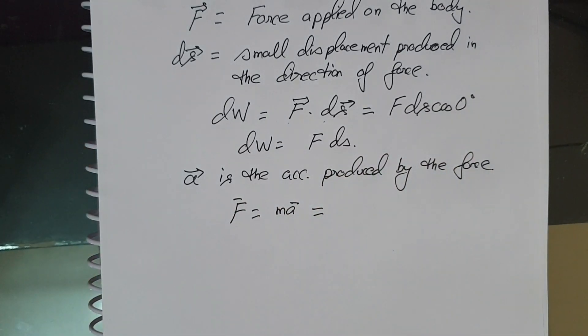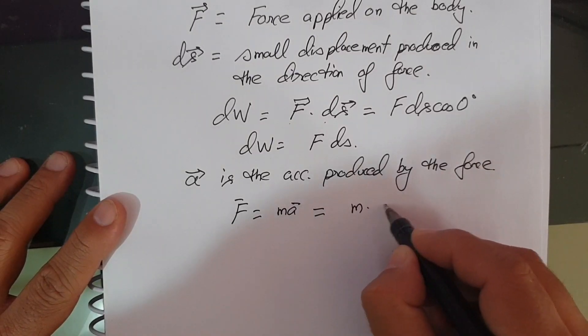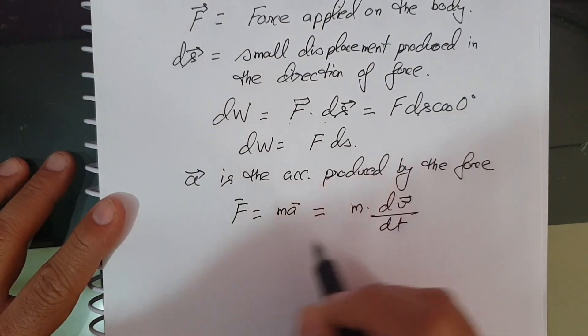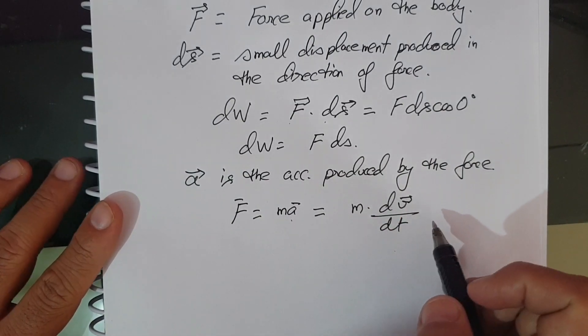Now we know that A is dV by dt. So this can be written as M into dV by dt. That is the value of A: dV by dt, the rate of change of velocity with respect to time.